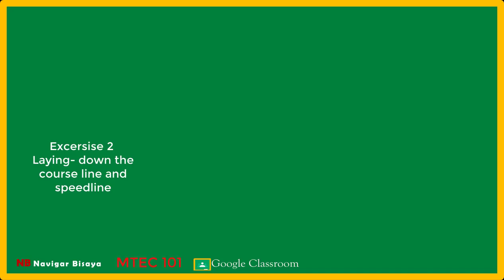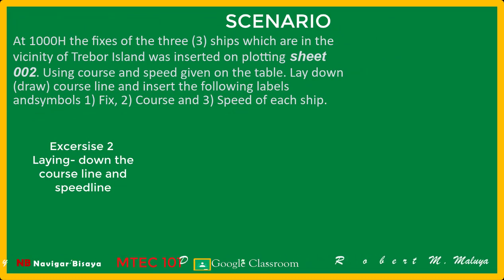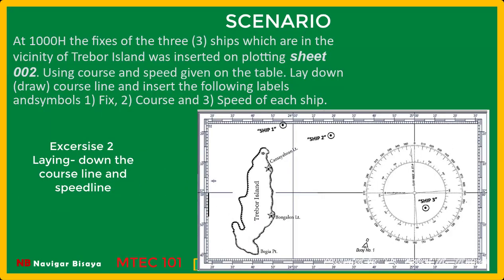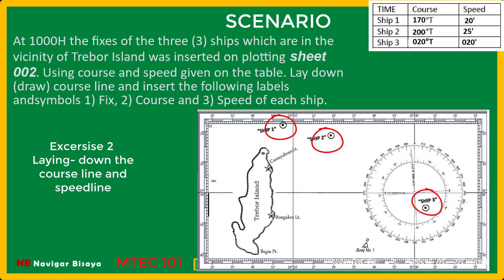Welcome back to this tutorial on MTIC 101 module 2 exercise 2. At 1100 hours, the fixes of three ships in the vicinity of Trevor Island were inserted on plating sheet 002: ship 1, ship 2, and ship 3. Using the course and speed given on the table, lay down the course line and insert the following labels and symbols: the fix, course line, and the speed of the ship.